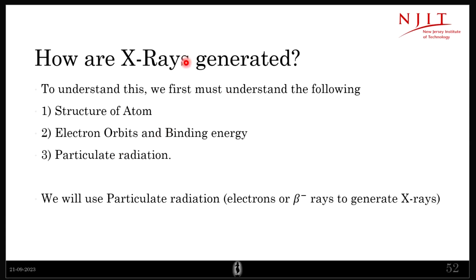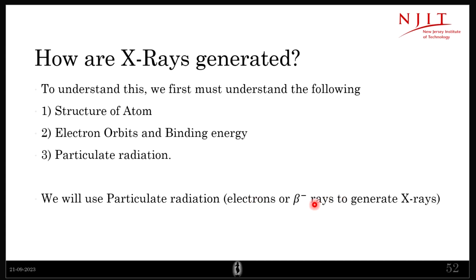In order to generate x-rays, we will use particulate radiation — electrons or beta rays — and convert the energy that these beta rays have into x-rays.